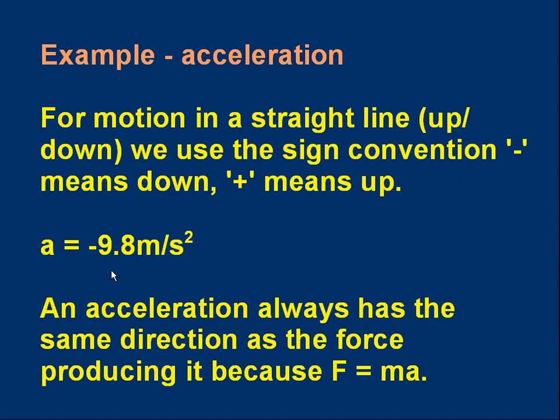We could write acceleration is minus 9.8 meters per second squared, for example. This is a vector because we've got direction information. The magnitude is 9.8 meters per second squared, but the minus sign tells us the direction. It's downwards if we're using our sign convention.